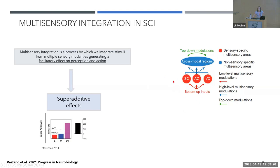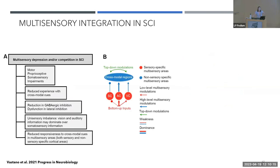Inputs can be integrated at the sensory level in so-called sensor-specific multisensory areas. There is more and more evidence that unisensory cortices — somatosensory, auditory, visual — are also able to integrate cross-modal stimuli. There is also a set of cross-modal regions involved, including the posterior parietal cortex, superior temporal sulcus, and lateral prefrontal cortex. This integration can be modulated by top-down mechanisms like selective attention.